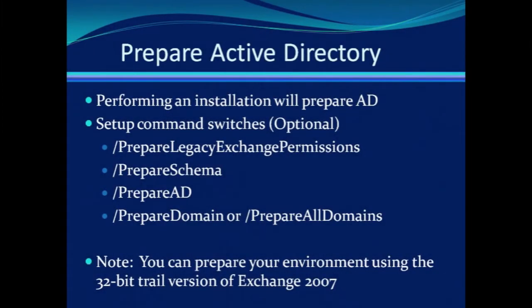When transitioning to Exchange 2007, there are changes that need to be made to the Active Directory schema, as well as to the forest and domain configurations. The simplest way to have these changes go into effect is to install an Exchange 2007 server into your environment, because at that time the server will check and see if your Active Directory is up to date, and if not, it will run all of the necessary switches behind the scenes.